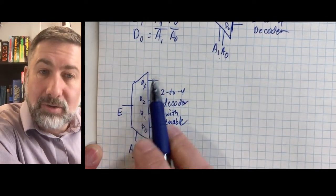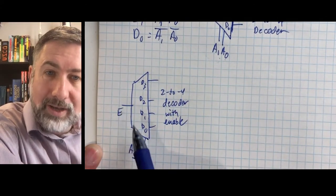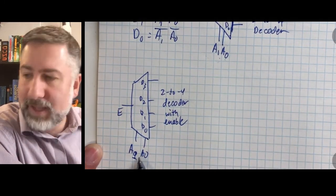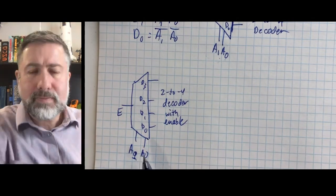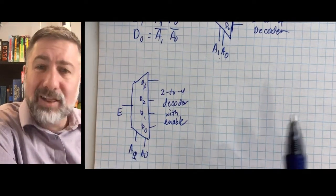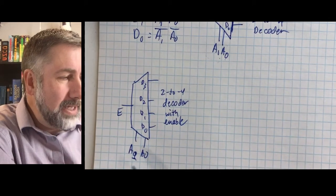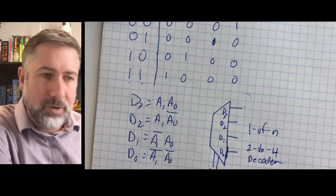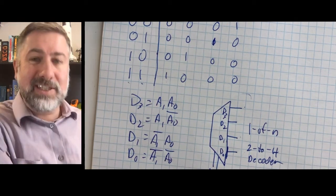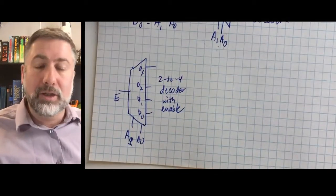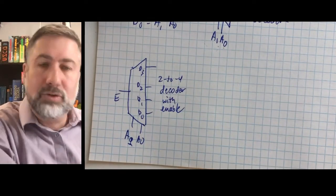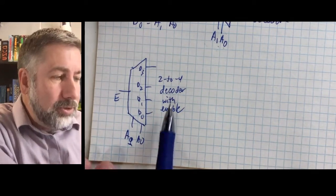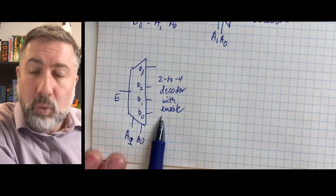If the enable is 0, all four outputs are 0. If the enable is 1, one of the outputs is active depending on the address. Now, what if I wanted to build a larger decoder but didn't want to go through the trouble of constructing all of these terms? What if I wanted to build a larger decoder using existing smaller decoders — maybe a 3-to-8 from 2-to-4 decoders, or a 2-to-4 from 1-to-2 decoders?